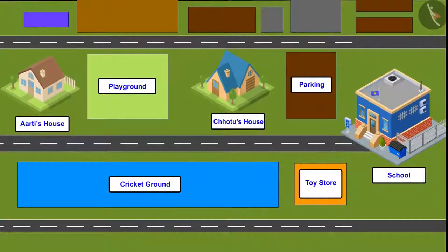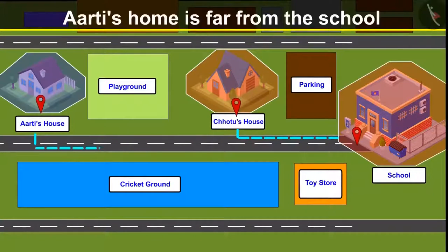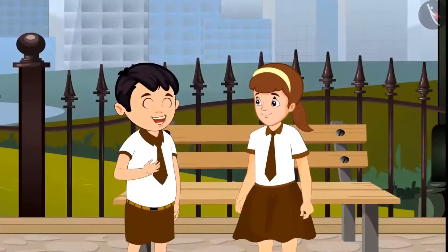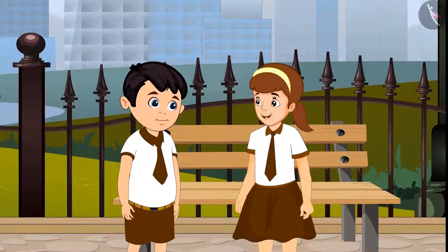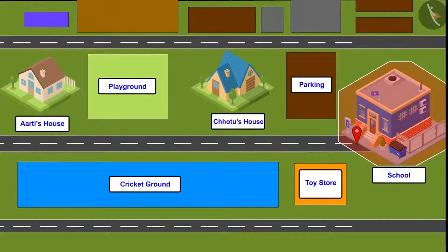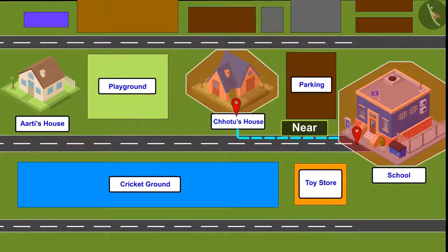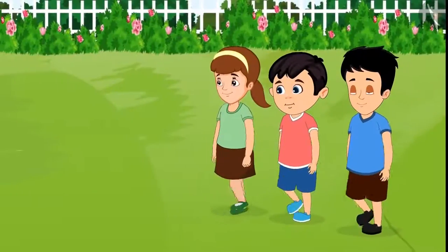Come on, let us see. Chotu replies: 'Aarti, my house is near the school and your house is far from the school. So that's why I reach home early and it takes you more time to reach home.' So kids, did you see? Chotu's house is near the school and Aarti's house is far from the school. That is why it takes her more time than Chotu to reach home.